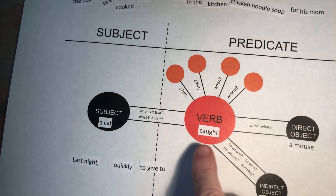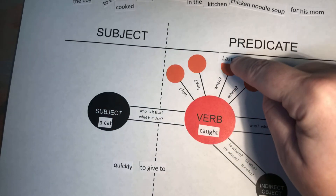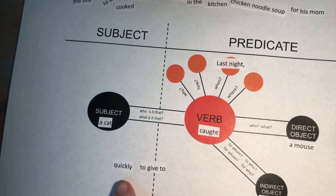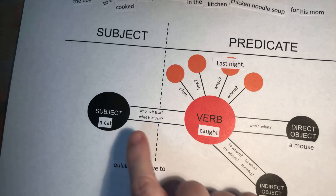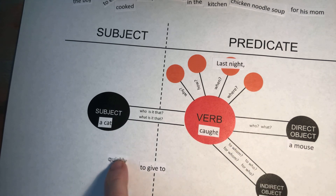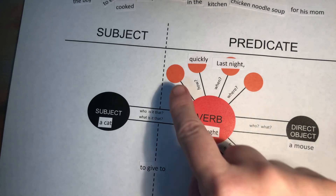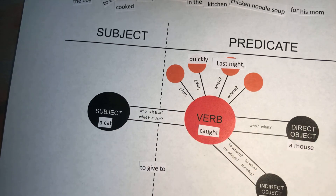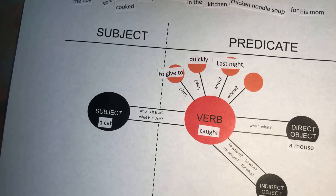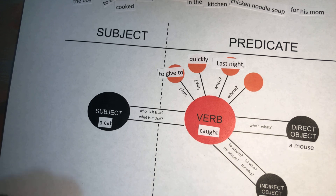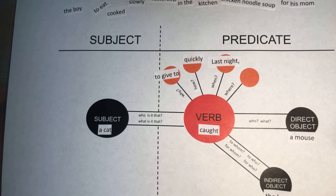When did the cat catch the mouse? Last night — the cat caught the mouse last night. How did the cat catch the mouse? The cat caught the mouse quickly. Why did the cat catch the mouse? The cat caught the mouse to give it to the boy. We don't know where the cat caught the mouse, and that's okay — all of these might not be filled up. Alrighty, my friends, go have some fun working on Sentence Analysis Advanced subject and predicate number three. Bye!